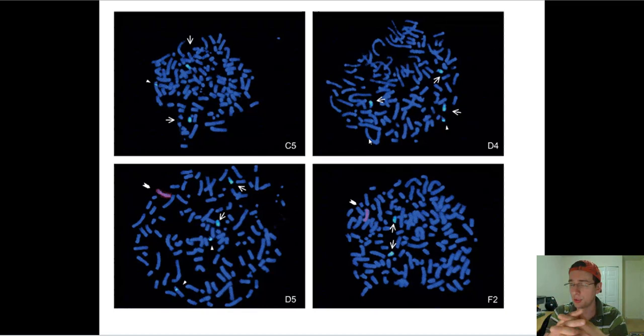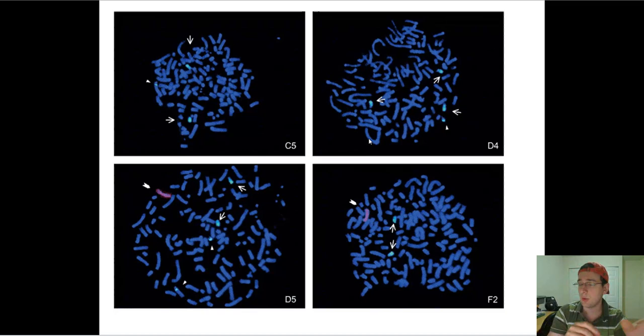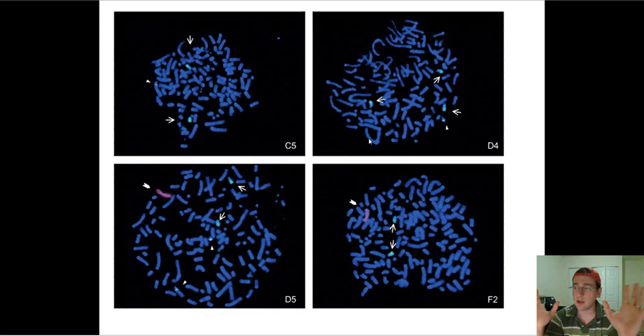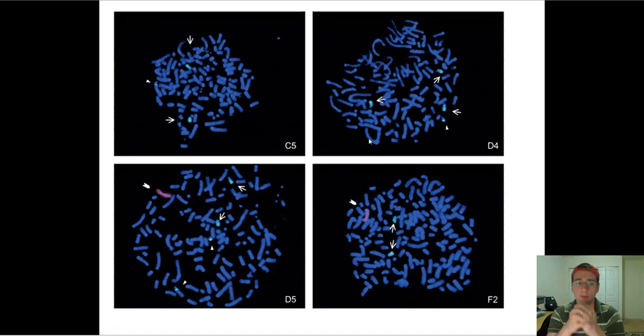Even if two species somehow produce an offspring that survives, those offspring probably can't have children because they can't make gametes due to so much aneuploidy. Most often the aneuploidy will be so severe that the zygote will never actually develop. And sometimes species might even have the same number of chromosomes, but the chromosome structure is completely different — one species may have more duplications, insertions, deletions, and translocations than the other. The chromosome structure is so different that the genes will not be compatible, not homologous to each other, and the chemical differences will be too much for the zygote to survive and be viable.